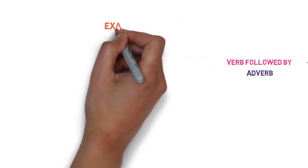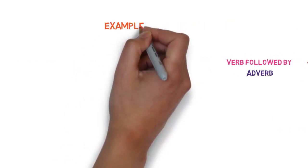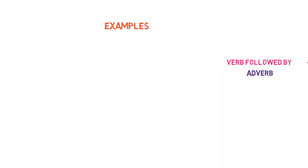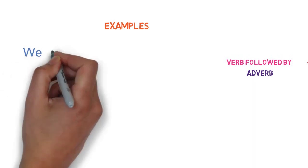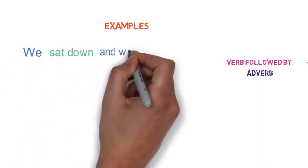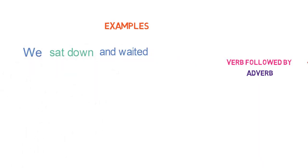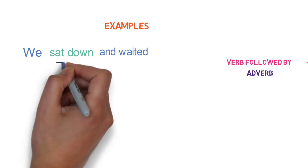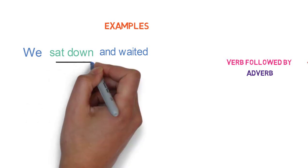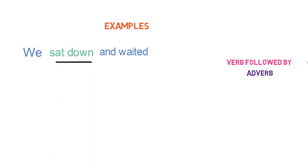Let's start with examples of verbs followed by adverbs. 'We sat down and waited.' Here, 'sat' is the verb and 'down' is the adverb. And the whole group of words 'sat down' is a phrasal verb containing an adverb.